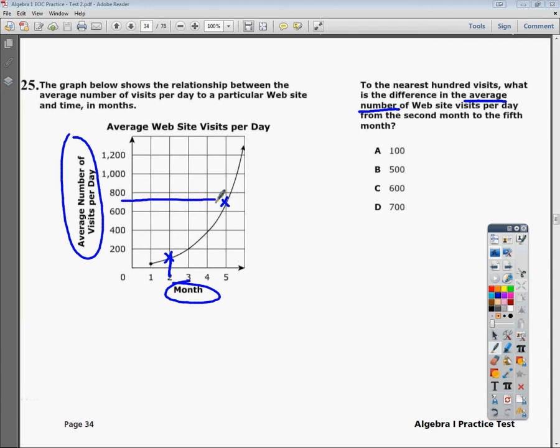I can say pretty confidently this is probably somewhere near 700. And of course, it says the word difference, which means I'm going to do a subtraction. This one's probably at around 100. So the difference between the fifth month and the second month is probably somewhere near 600. The answer to number 25 is C.